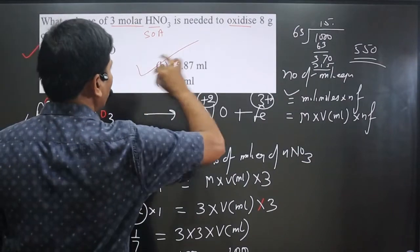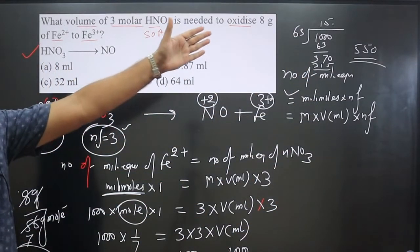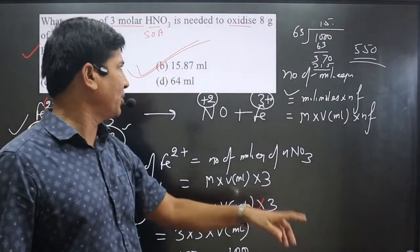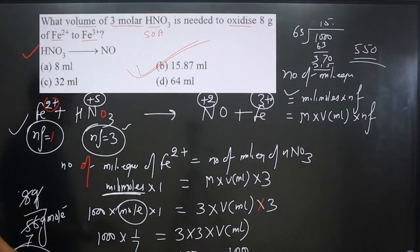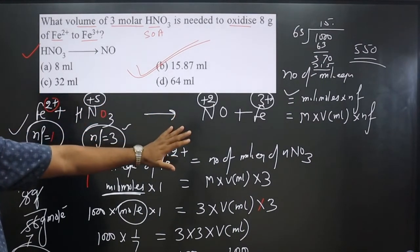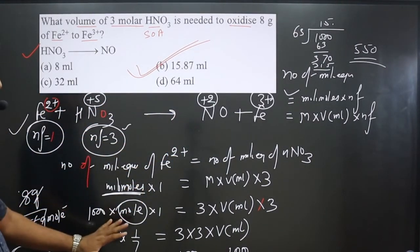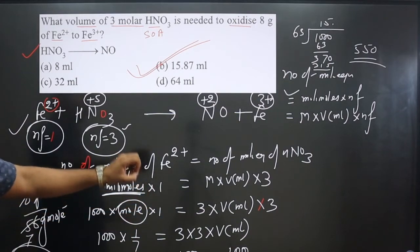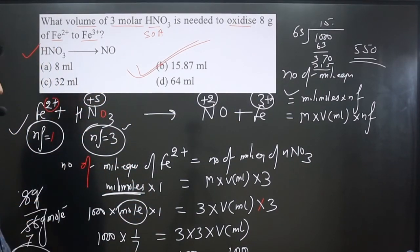Then B option is correct. Such a wonderful concept we have applied, that is number of milliequivalents. You can see, once the equation is ready, you can calculate n-factor value, apply the formula, plug in the values, and then you can calculate the desired value.